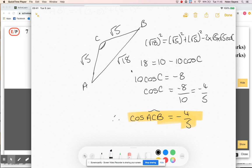So that is giving me, when I do inverse cos of minus four fifths, I'm getting 143.1 degrees.